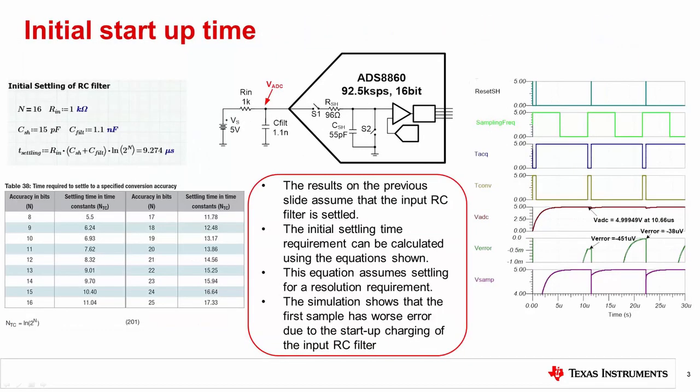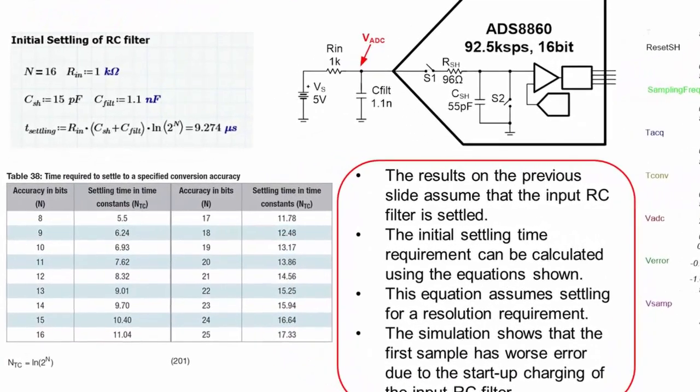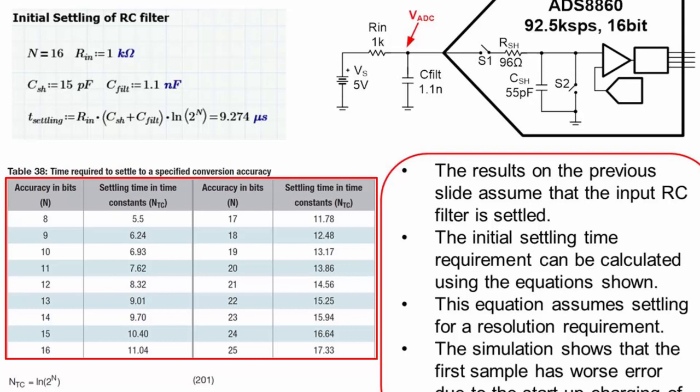It is important to understand that the previous calculation and simulation assume that the input capacitor C-Filt is fully charged at the start of the conversion. This will not be true immediately after the system is powered up. The initial power-up period can be calculated using the table or equation shown here. The equation is based on the RC time constant and the number of bits of resolution.